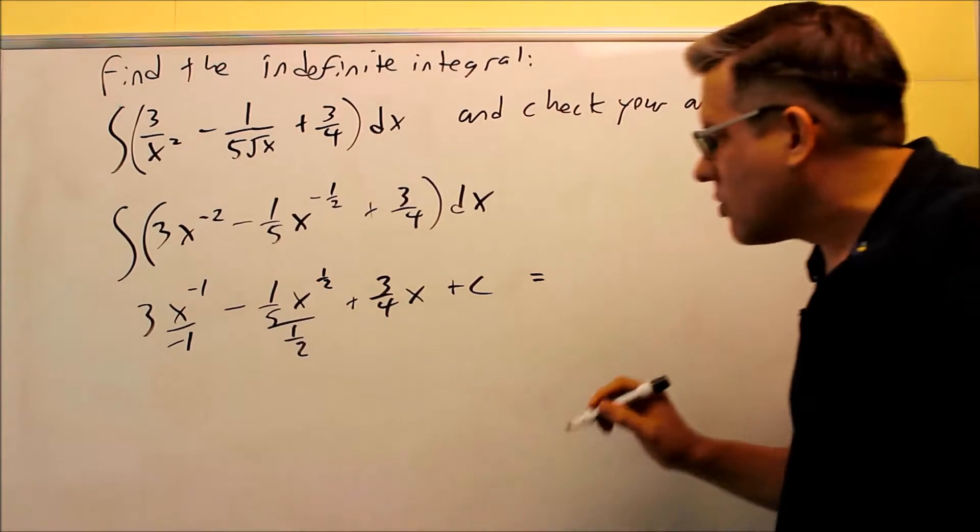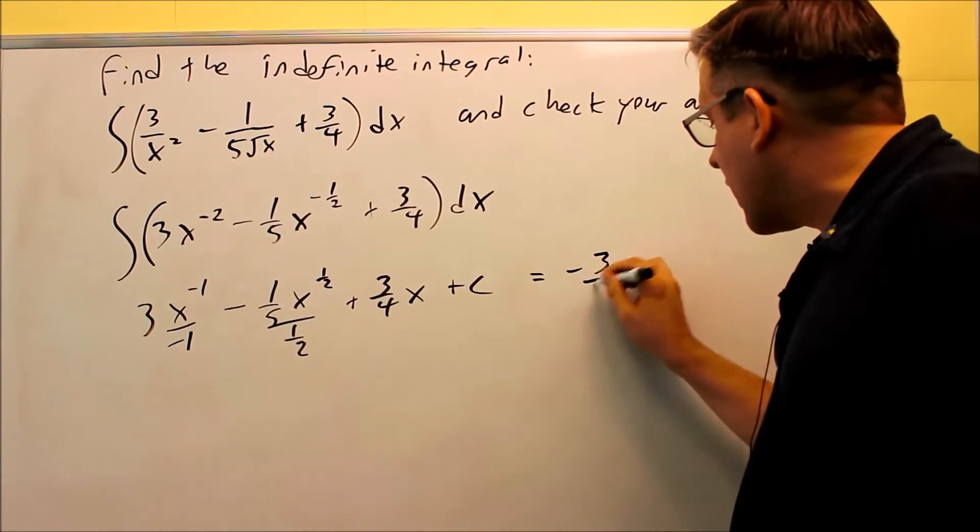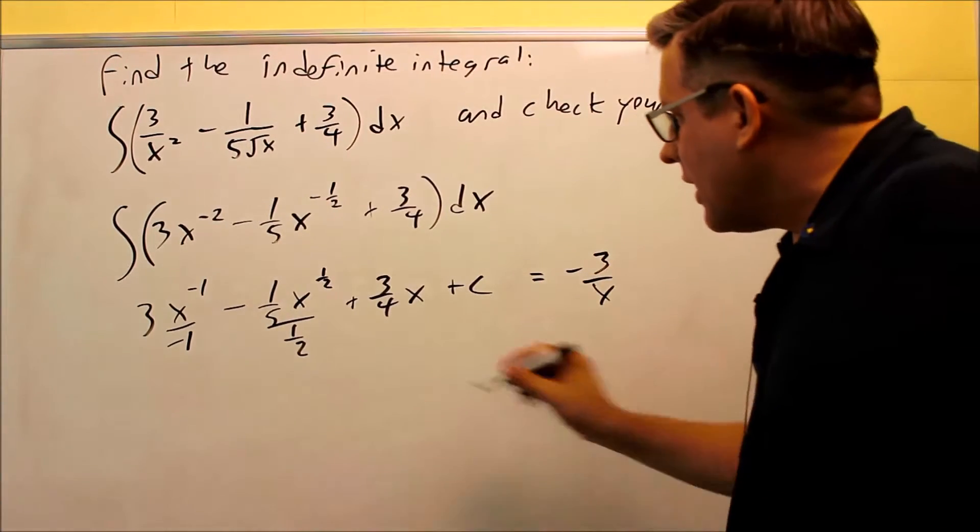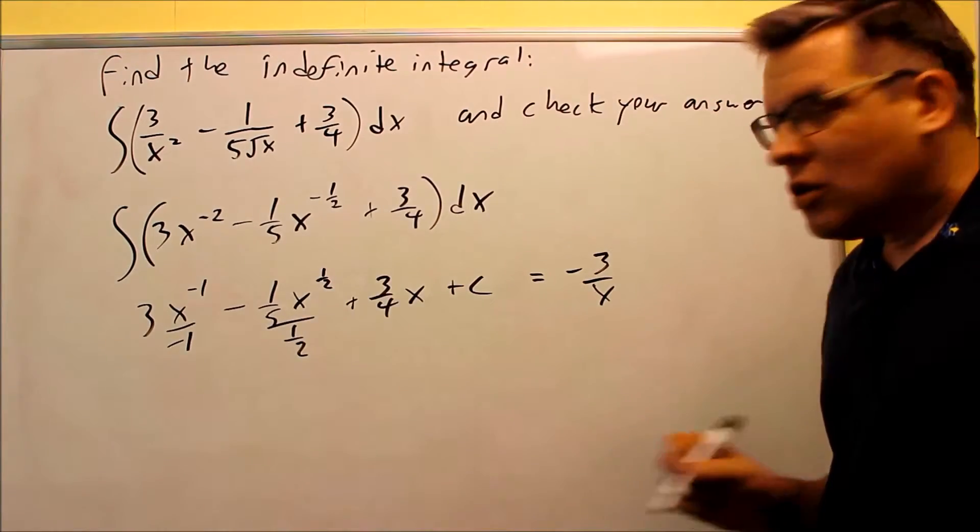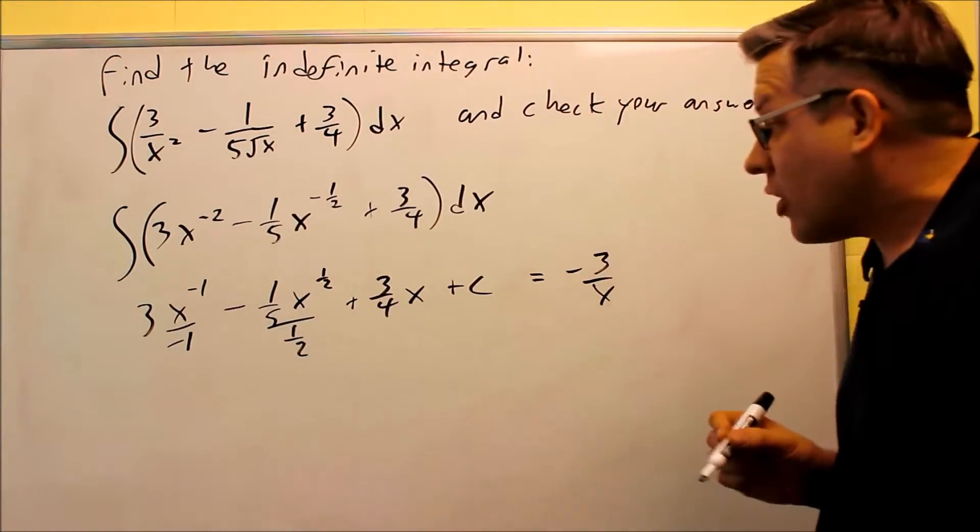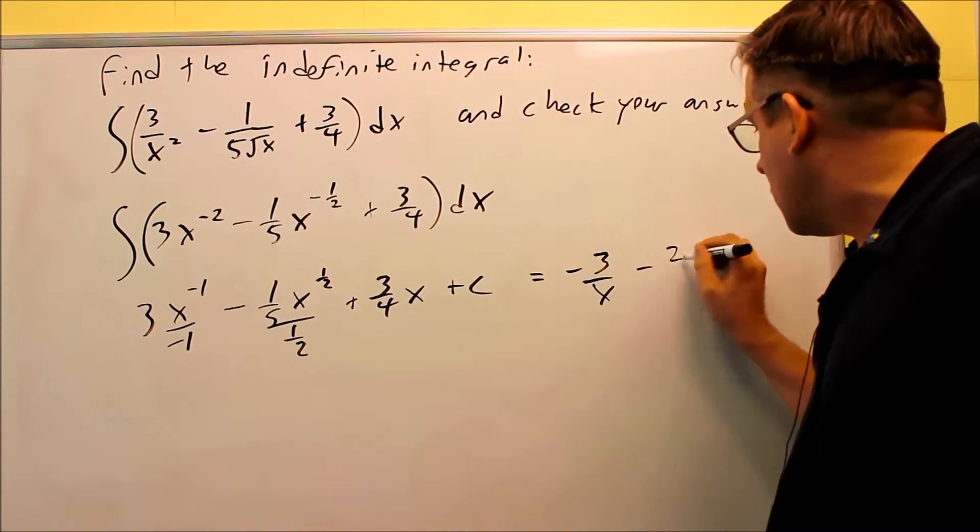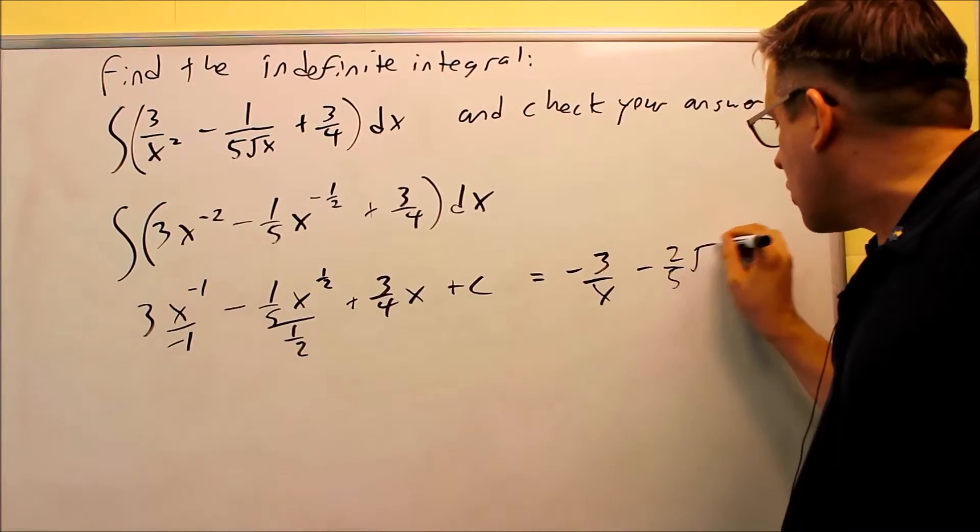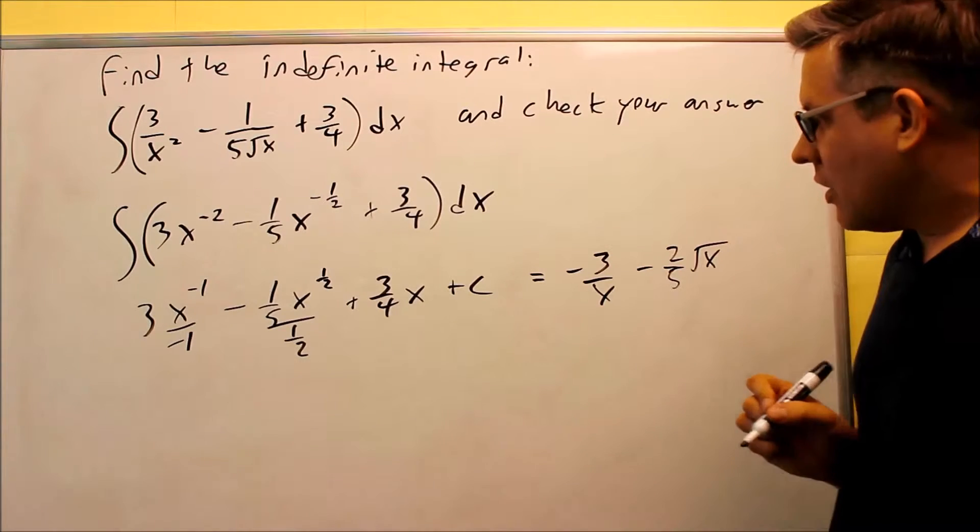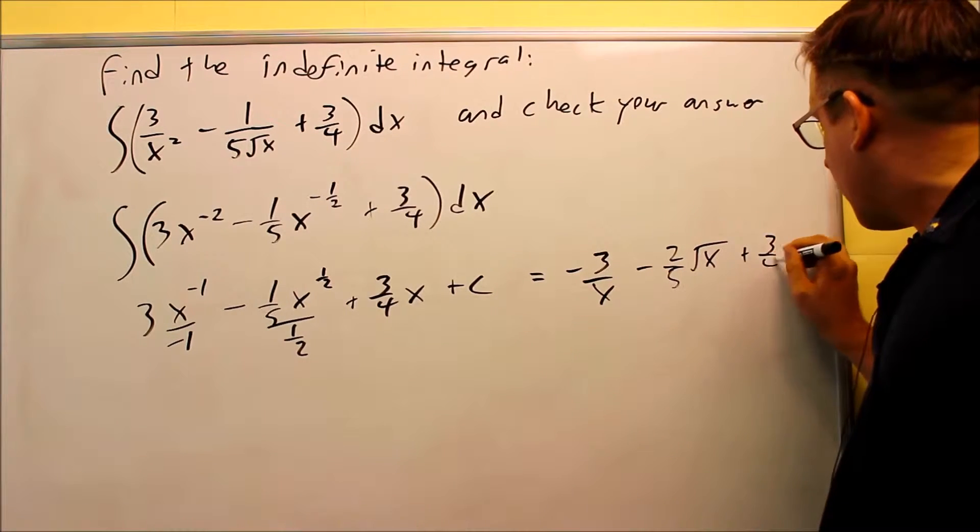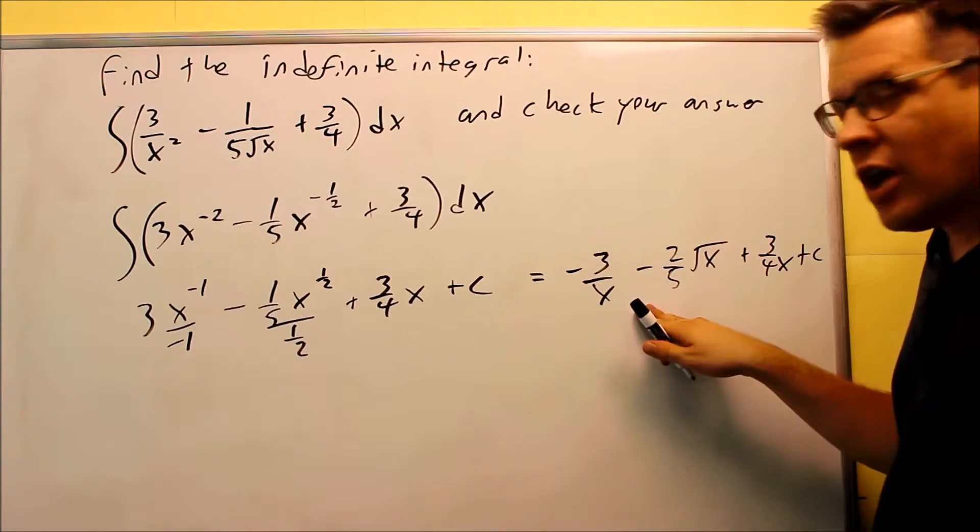Let's do a simplifying step here. So we're going to rewrite this. That's negative 3, and I'm going to write it actually as negative 3 over x. This one, if you take negative 1 fifth times, or divide it by 1 half, it'd be like 1 fifth times 2 over 1. So you're going to get 2 fifths here. So minus 2 fifths, and I could write this back as a square root there, x to the 1 half. And then I have plus 3 fourths x plus c. This would be the simplified version, what you'd put for your answer.